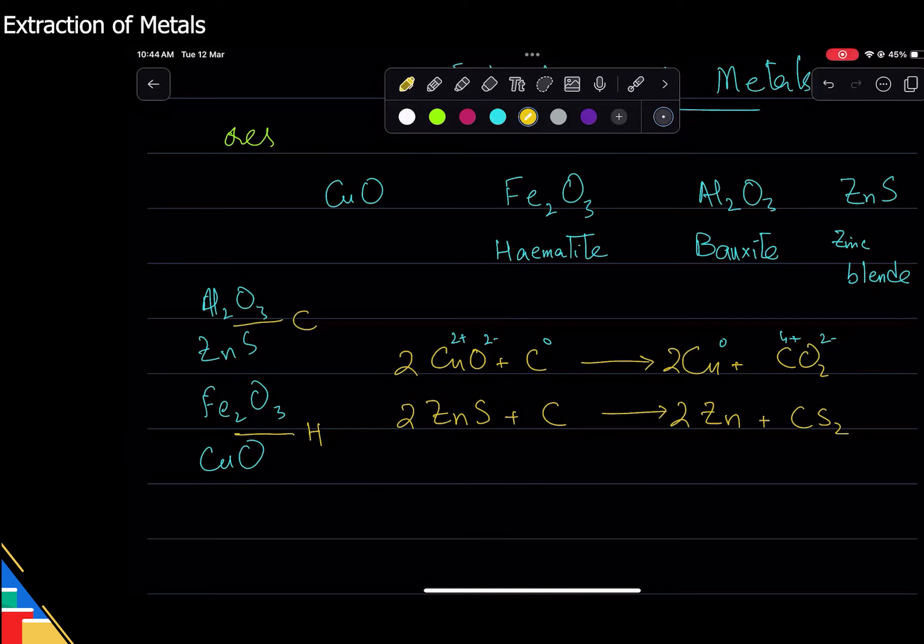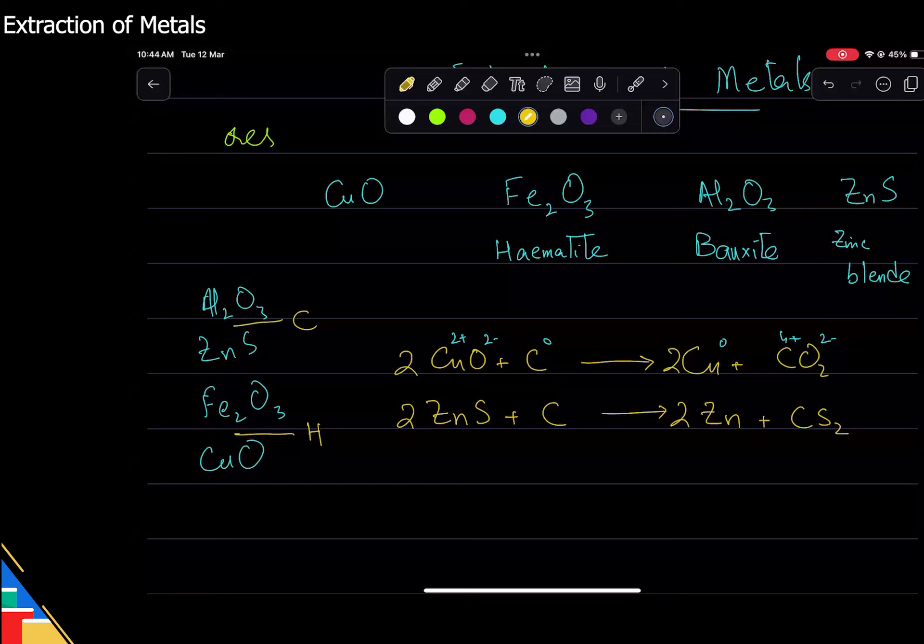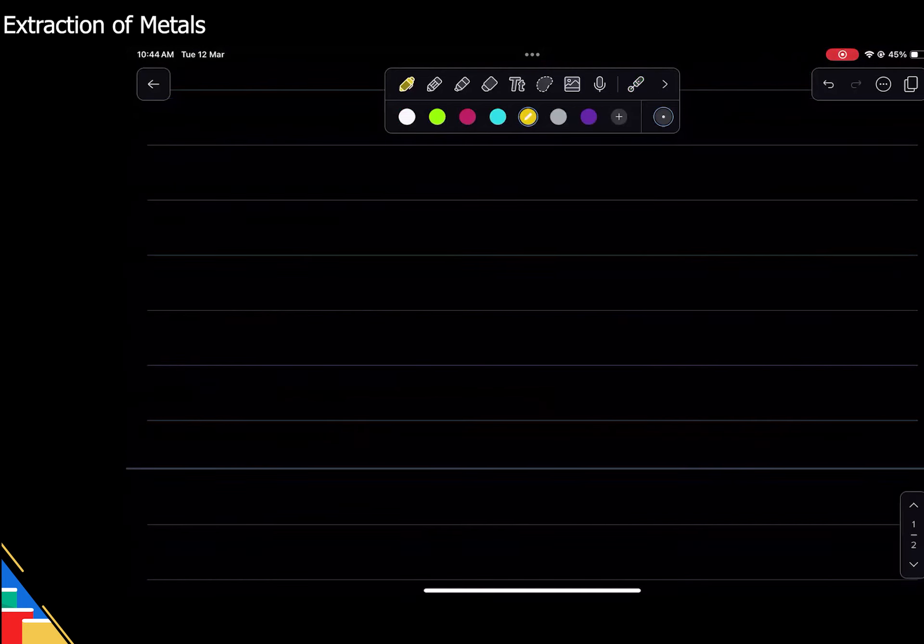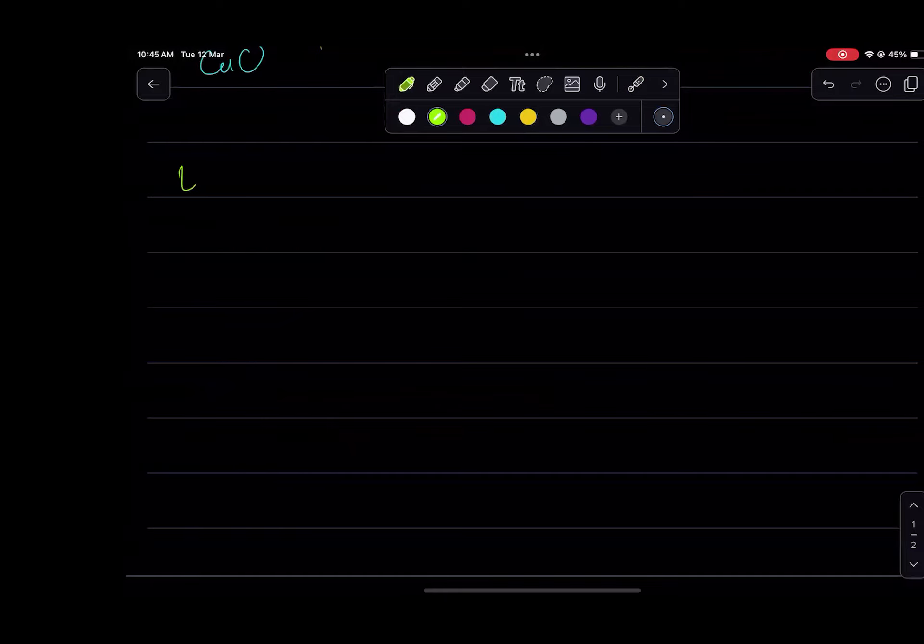So again it comes down to what are you going to work with. So that means for copper the ideal case would be simply take hydrogen and copper oxide and that is how we get extraction of copper done.